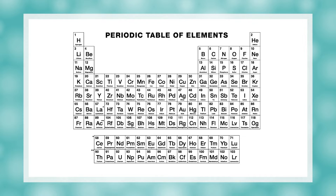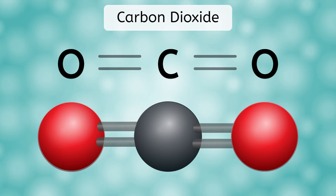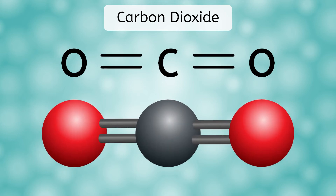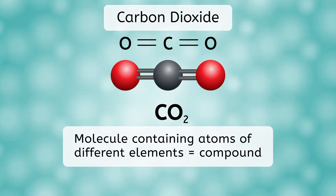There's another molecule you're interacting with right now which contains atoms of different elements. It's a gas called carbon dioxide, and your body releases it as waste every time you exhale. Carbon dioxide contains one carbon atom and two oxygen atoms bonded together, so the chemical formula is CO2 — the C with no number after it implies there is just one carbon atom. Because this molecule contains atoms of different elements, it is an example of a compound.